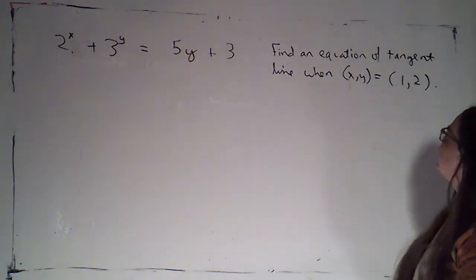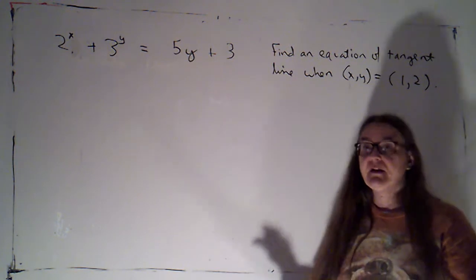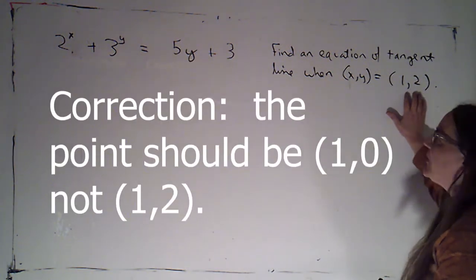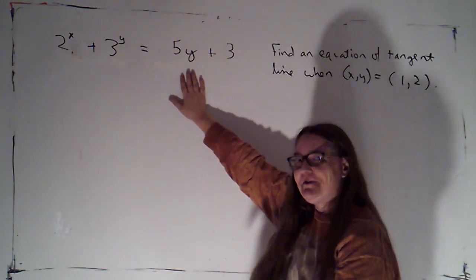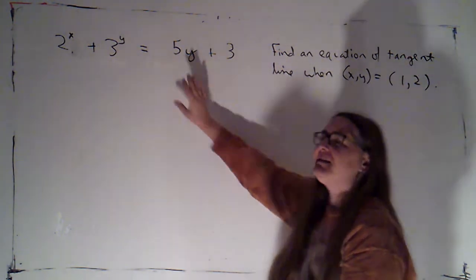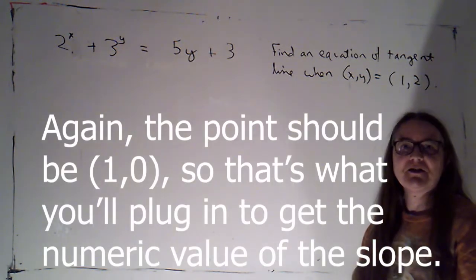You know that to find a tangent line, you need two things, a point and the slope. Here's the point. The whole thing is given to you. What you're going to need to do is use implicit differentiation to get a formula for y prime or the slope of the tangent line at a point. And then to find the slope of this particular line, you'll plug in the point 1, 2.